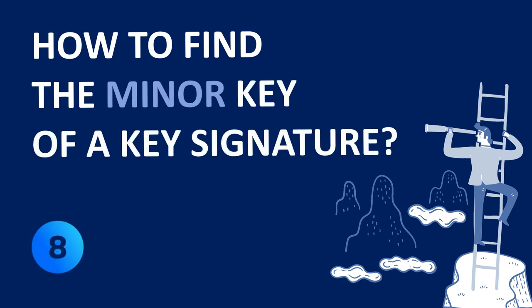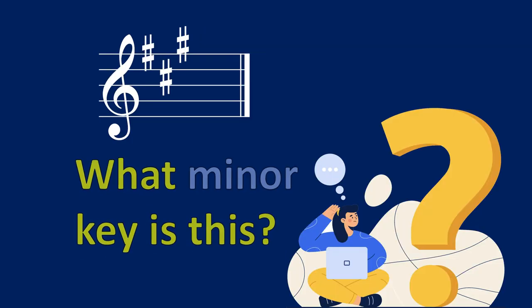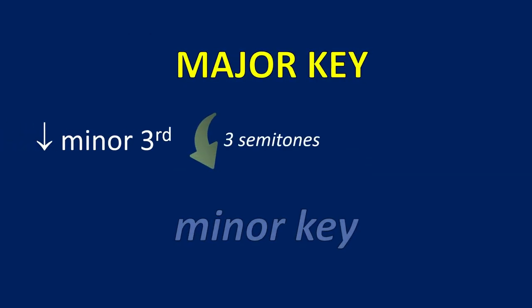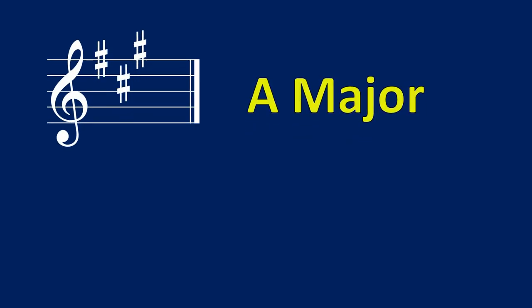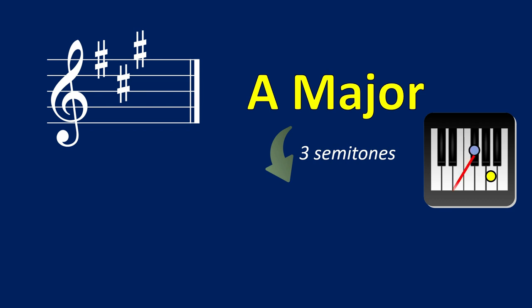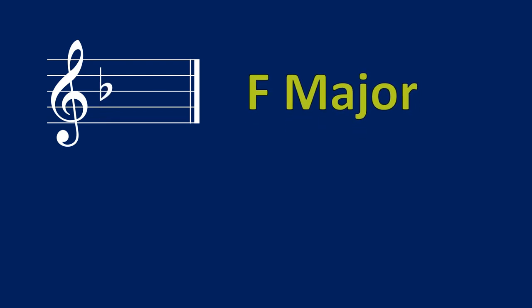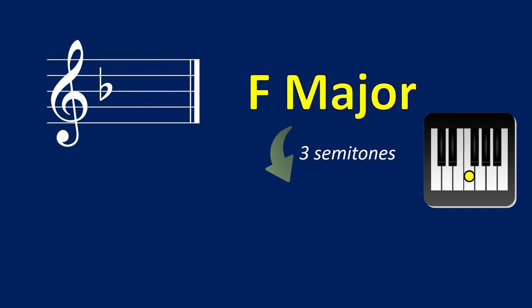How to find the minor key of a key signature? Every key signature is shared by a major key and its relative minor. First use the tricks learned to find the relative major, then count down three semitones to get the minor key. For example, three sharps gives A major; lower A by three semitones and you get F sharp minor. So three sharps means A major or F sharp minor. With one flat: F major, lower F by three semitones, and you get D minor — so one flat means F major or D minor.